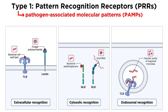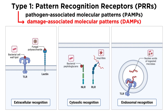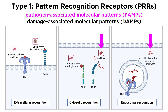PRRs are able to recognize pathogen-associated molecular patterns (PAMPs) and damage-associated molecular patterns (DAMPs). PAMPs are molecular signatures that are only found on microbes — things like bacterial glycolipids, single-stranded DNA from viruses, or the distinct sugars found in fungal cell walls. PAMPs also tend to be molecules that microbes need in order to survive, which prevents them from evolving away from recognition by the immune system.